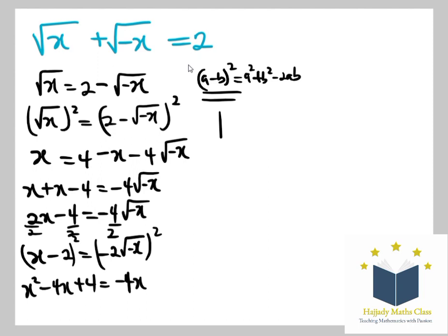So with this, I have x² + 4 = -4x + 4x. So I have x² = -4.